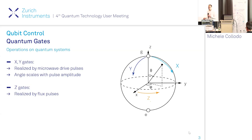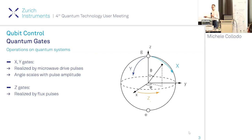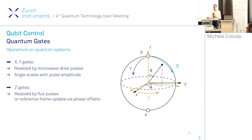For superconducting qubits, X and Y gates are realized by microwave drive pulses at the qubit frequency, and the angle of rotation around the Bloch sphere scales with the pulse amplitude. We can also perform Z gates, corresponding to a detuning of the qubit frequency, which can be realized by flux pulses on the qubit, or by updating the reference frame of our drive pulses — changing phase offsets for the microwave drive pulses. This would then be a virtual Z gate.